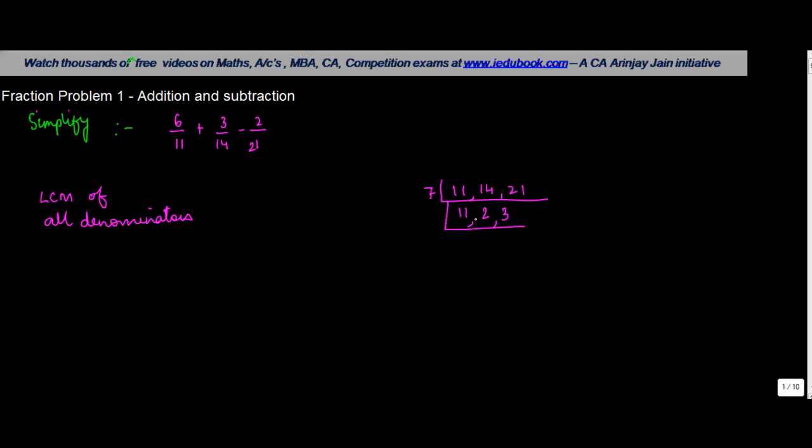Now, is there any number which divides either 2 or more of these numbers? The answer is no. Hence, the LCM will be 7 into 11 into 2 into 3. You can watch our videos on LCM to see why this thing works. So this will give you 2 into 3 is 6, 6 into 11 is 66, 66 into 7 will give you 462.